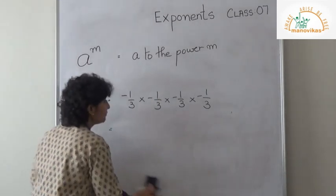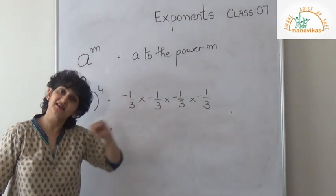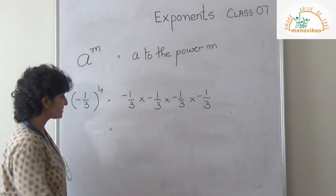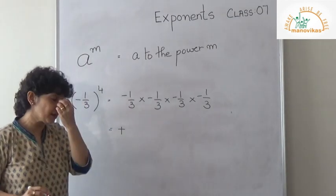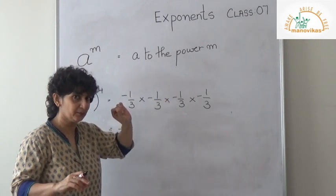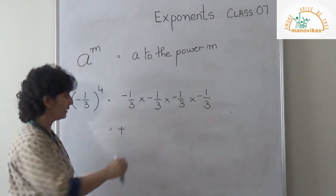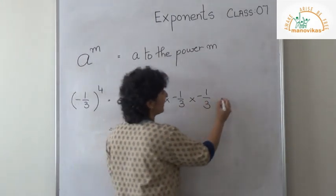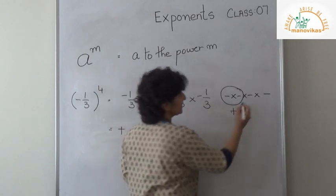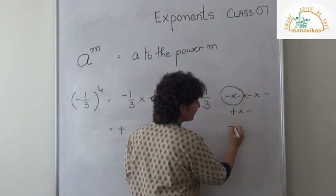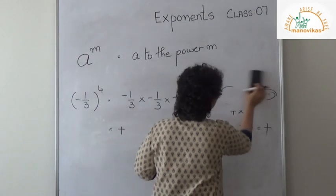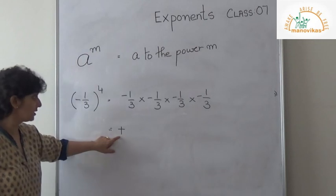Be careful here — please make a note of the sign. Minus and minus gives me plus, and again minus and minus gives me plus, so my answer here will be positive. Always remember: if you have an odd number of negative factors, the answer is negative. Here you have an even number — 1, 2, 3, 4 — so the answer is plus.